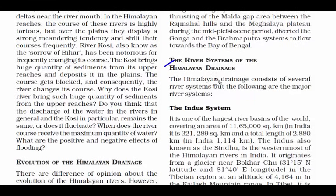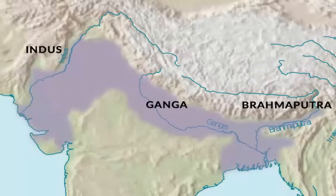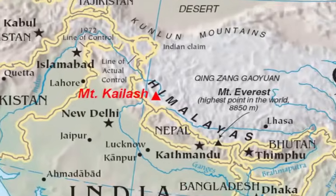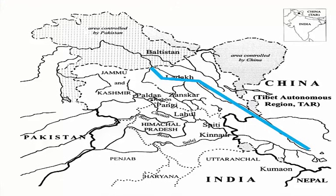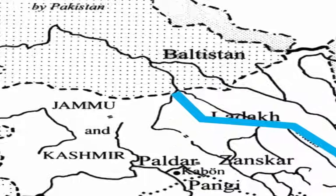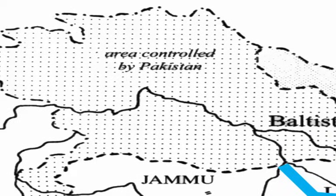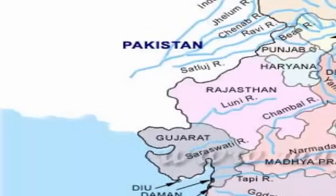The Himalayan drainage system consists of three major river systems: the Indus, the Ganga, and the Brahmaputra. Indus is one of the largest river basins of the world. Known as Sindhu near Pakistan, it originates from a glacier near Bokhar Chu in the Tibetan region near the Kailash mountain range. It flows northwest between the Ladakh and Zaskar ranges, cuts across the Ladakh range forming a spectacular gorge near Gilgit in Jammu and Kashmir, enters Pakistan near Chillar in the Dardistan region, and finally drains into the Arabian Sea east of Karachi.